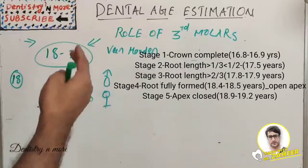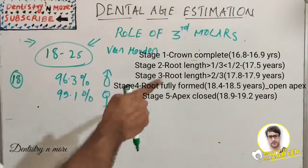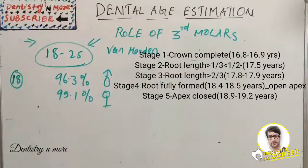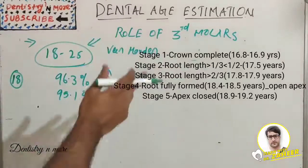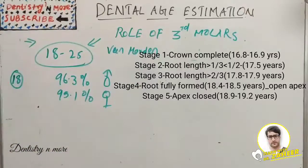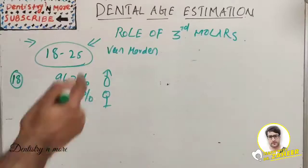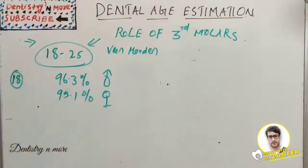Stage 4: root completely formed, person's age is 18.4 to 18.5 years. If the person's root apex is closed, then the person's age will be 18.9 to 19.2 years. So likewise we can estimate the dental age of a person.